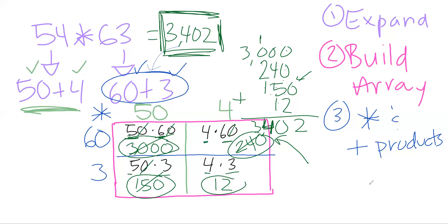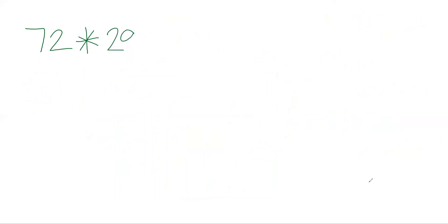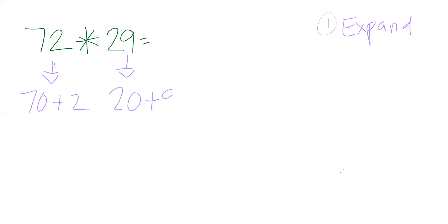Let's do one more before moving on to three-digit numbers. This is a good opportunity to pause, work on it yourself, then come back. Let's try 72 times 29. Step one — expand: 72 becomes 70 plus 2, and 29 becomes 20 plus 9.